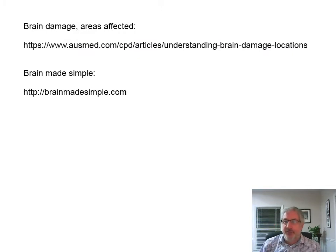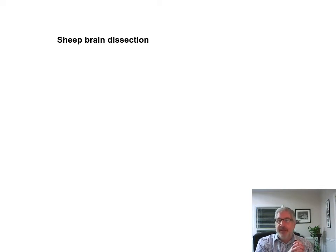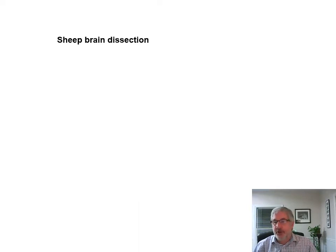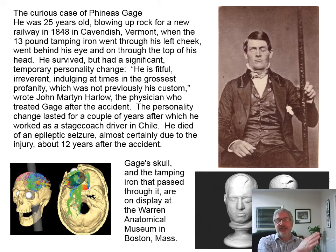There are a couple of articles you can look up on understanding brain damage location, and a website called Brain Made Simple which has some pretty good content. We're going to go through a sheep brain dissection as the last thing — it's what we would do in class, along with a spinal cord dissection. I'll show you the pictures of what that looks like and describe what it looks like in real life.